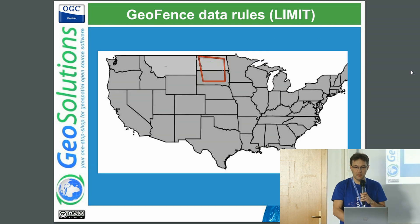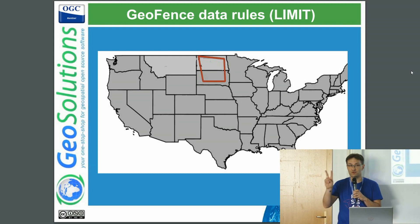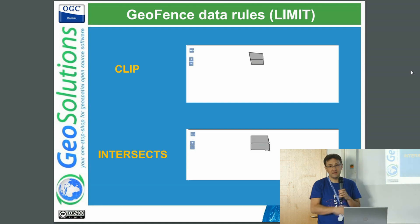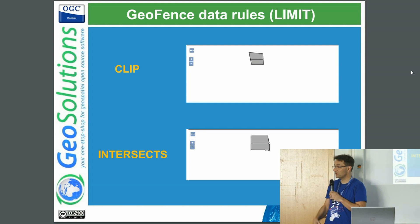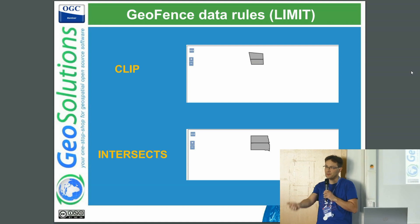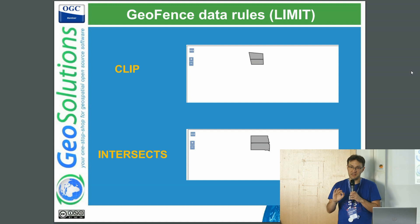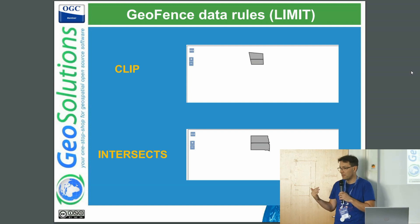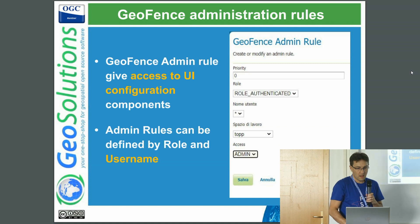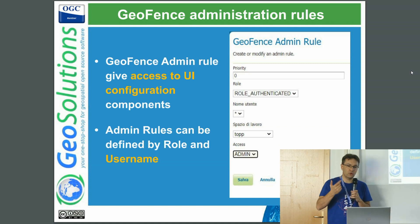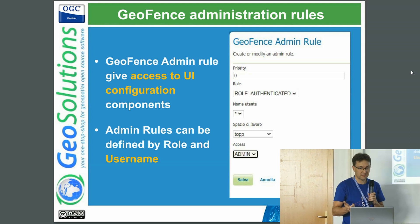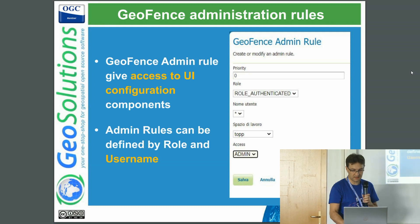You provide an area by WKT and you can control what kind of filtering you get. For example, given a United States polygon, you have two options: filter and clip. If you say clip, your data will actually be clipped to the polygon, modifying the geometries returned so the user sees nothing outside the clip area; with intersect, you will see anything that overlaps with your restricted area. You can also control administration rules with GeoFence to limit administration access, just like with the built-in configuration.